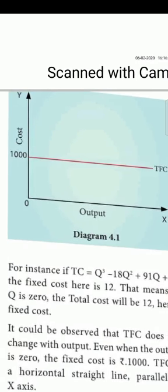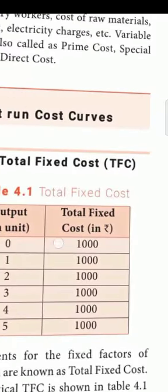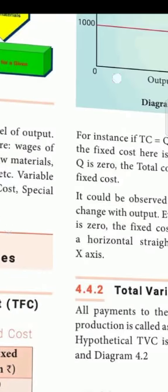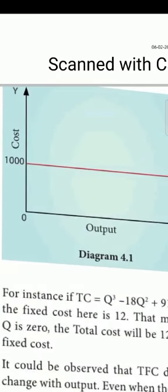Now, in an industry, when the output is at zero level, the cost is fixed. As 1, 2, 3, 4, 5 units increase — as production and output increase — the cost remains fixed at 1,000 rupees. The total fixed cost remains at 1,000 rupees.